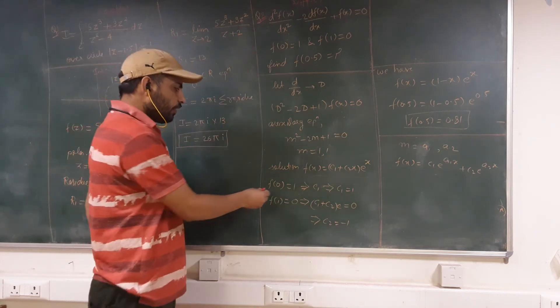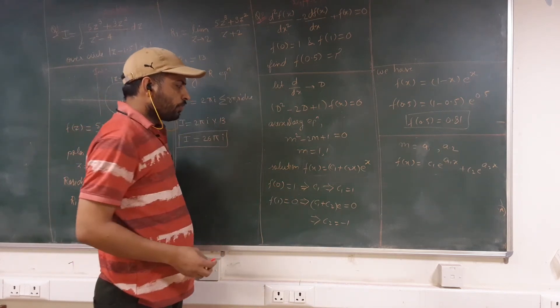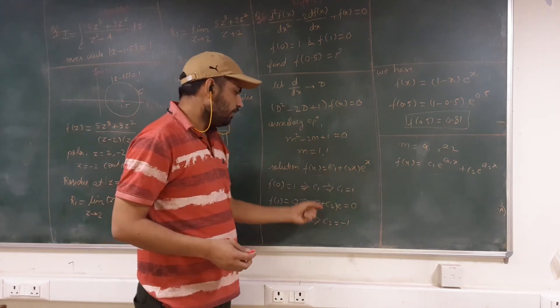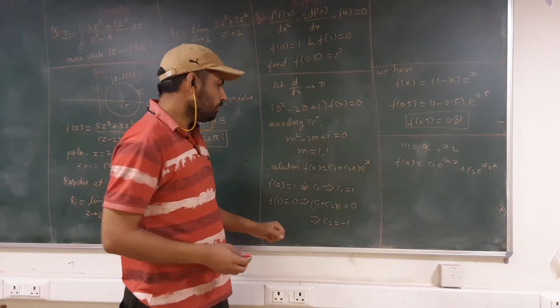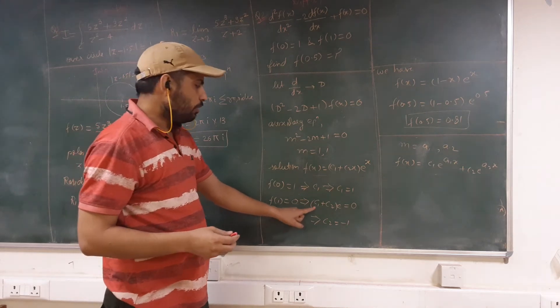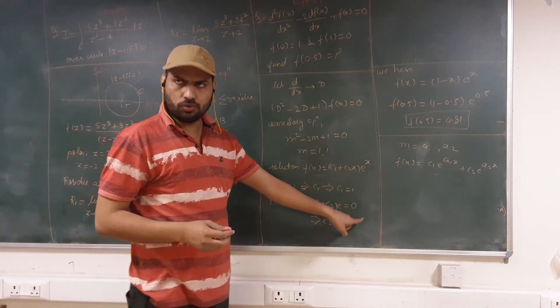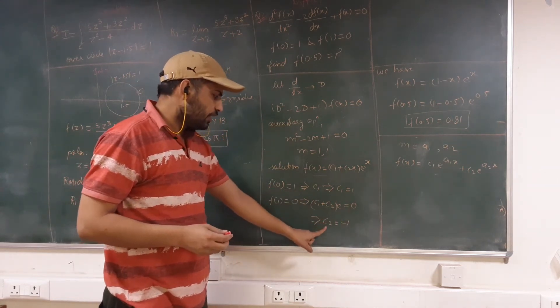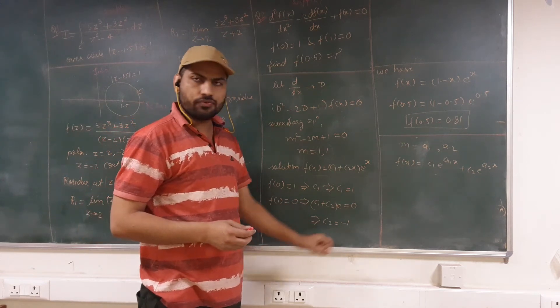Now we can put the boundary conditions. If I put f(0) = 1, so this condition will give us c₁ = 1. Similarly, if we put the second boundary condition f(1) = 0, then we will have (c₁ + c₂)e = 0. So from here, we can get that c₂ = -c₁, that is -1.